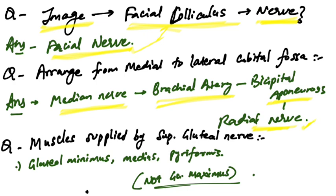Muscles supplied by the superior gluteal nerve are gluteus minimus, gluteus medius, and piriformis. Not gluteus maximus - these three are supplied by superior gluteal nerve.